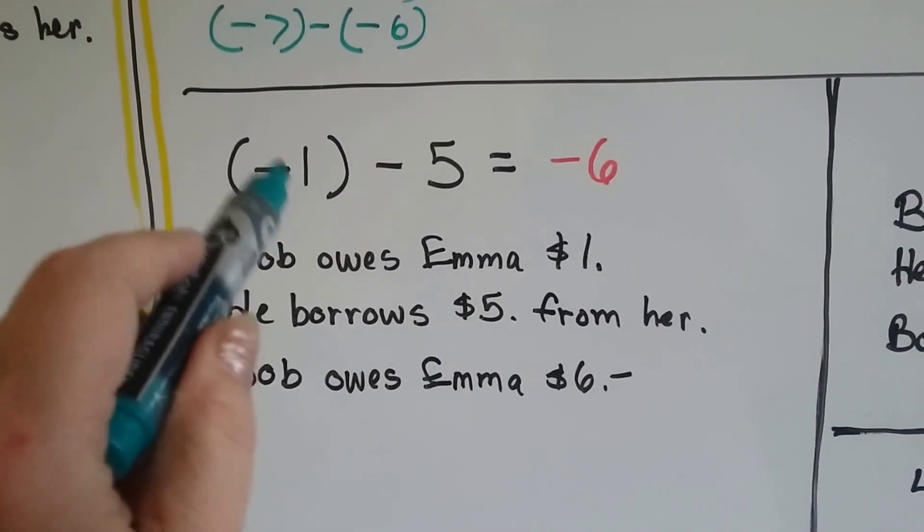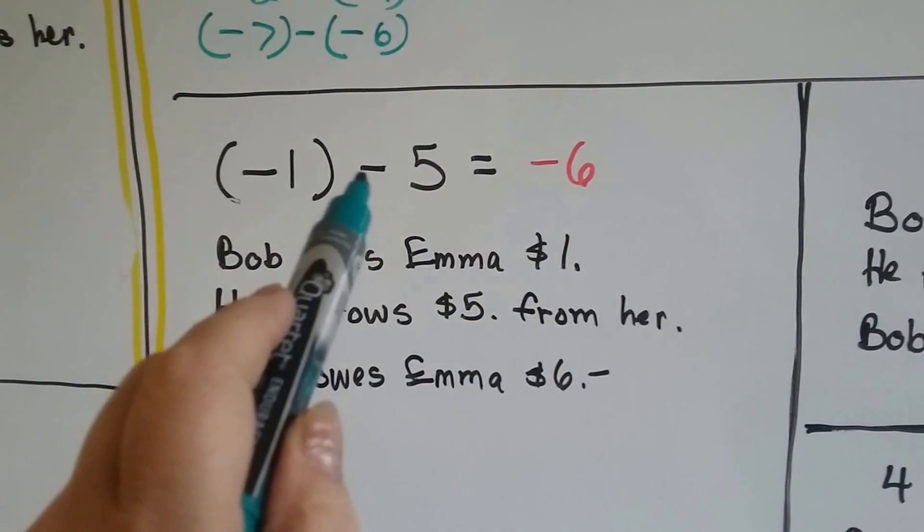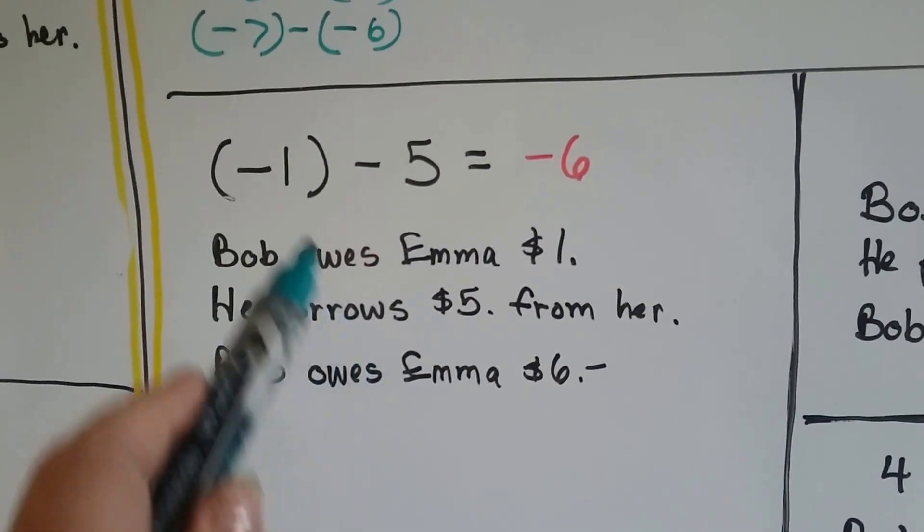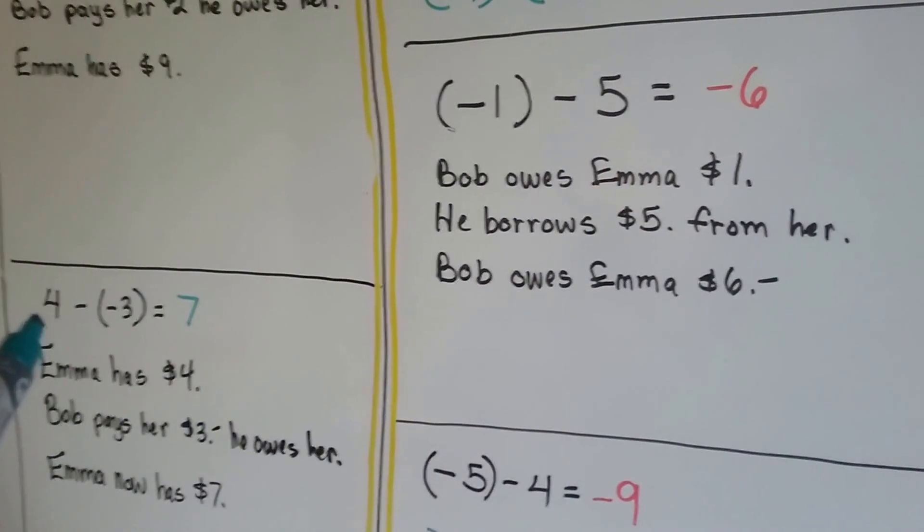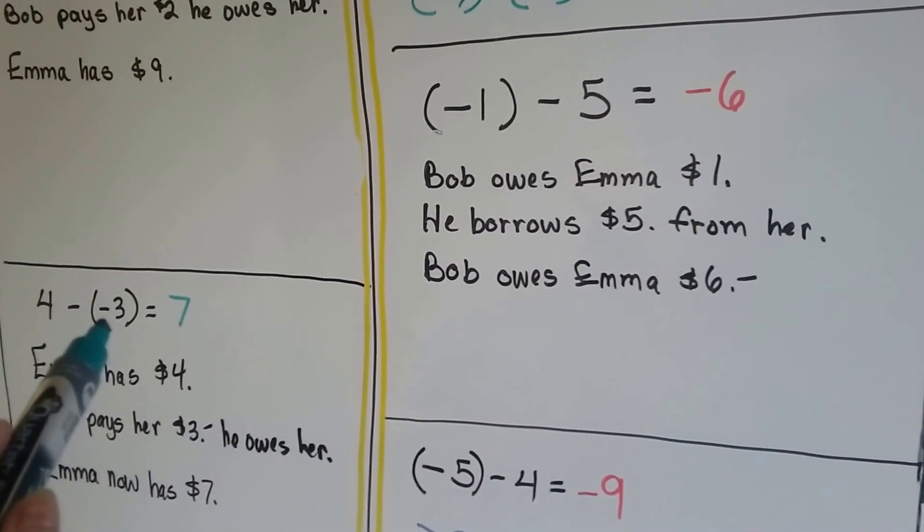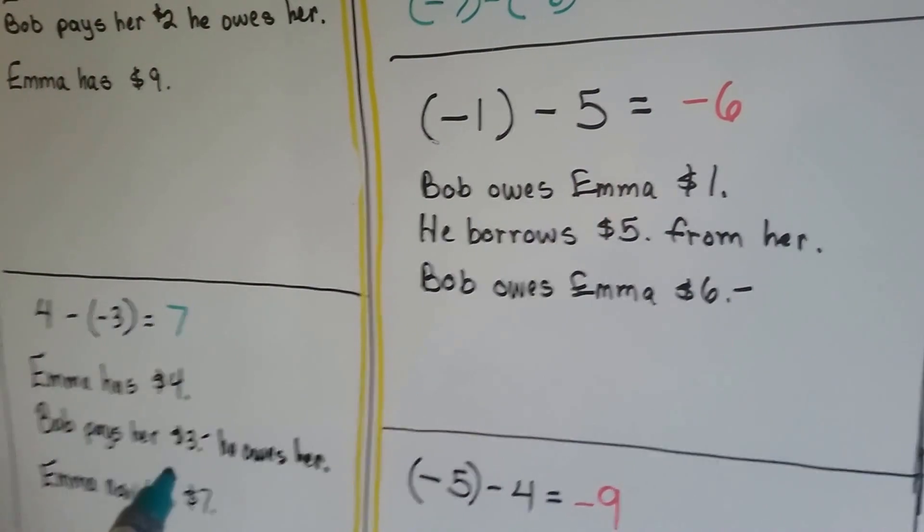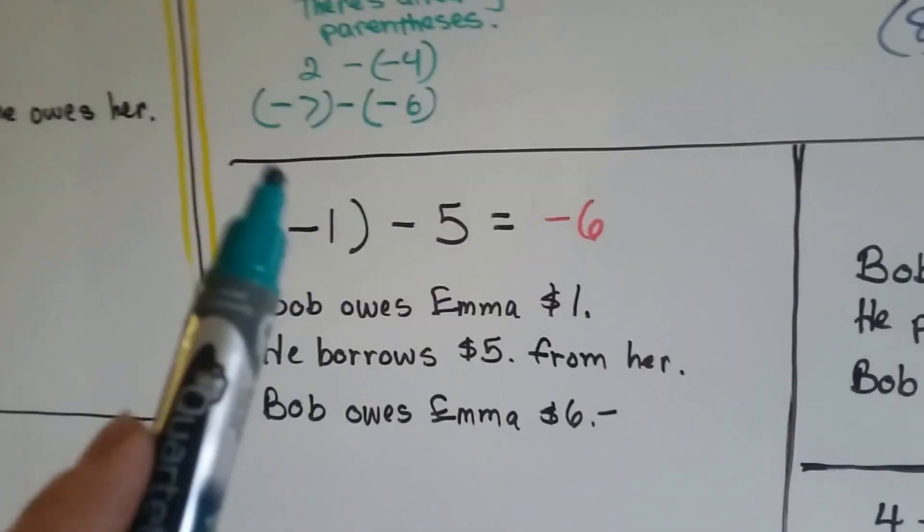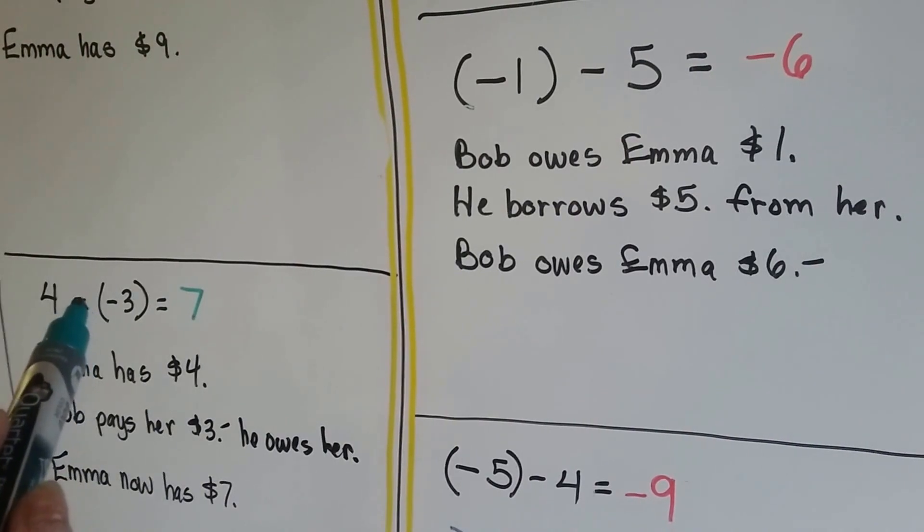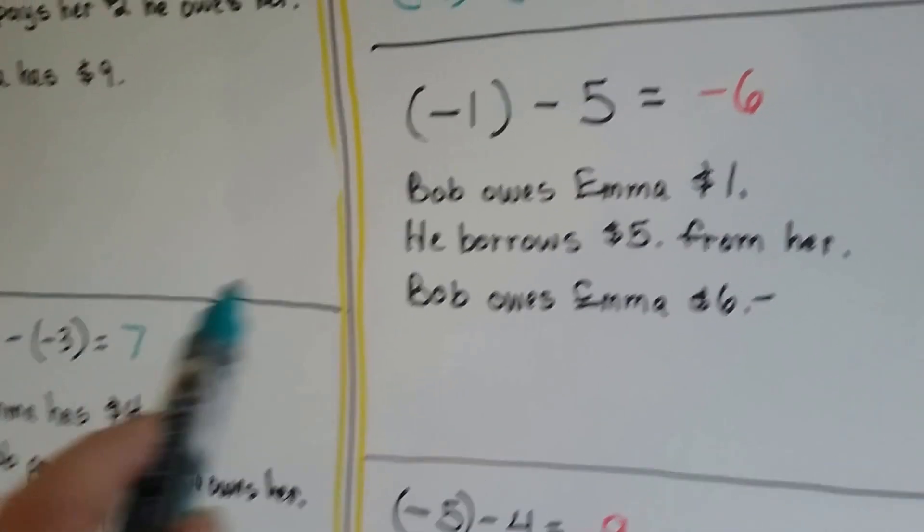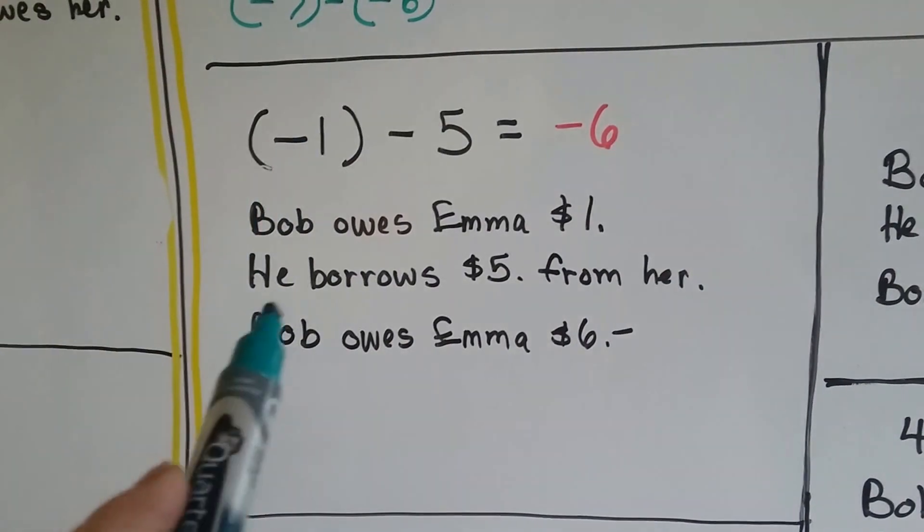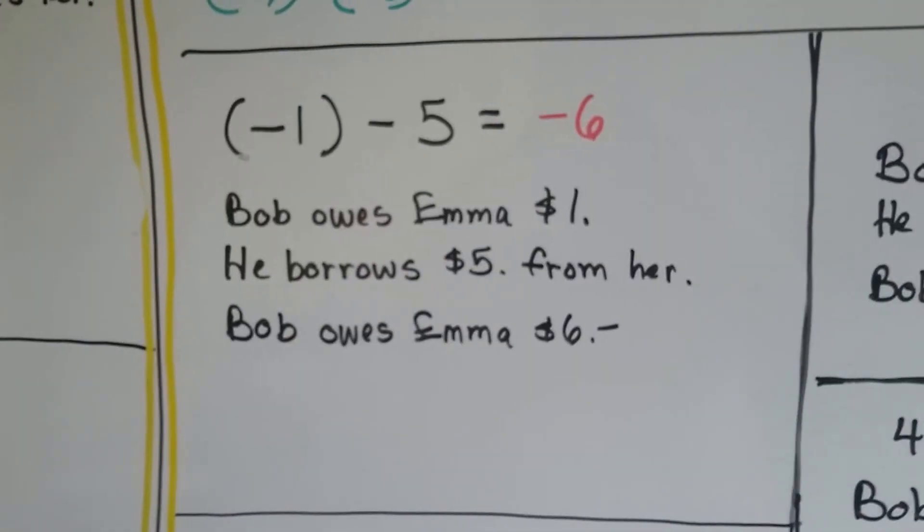Bob owes Emma a dollar. He's a dollar in debt to Emma. And then he takes away another $5. Now he's in debt to her $6. See how that happened? Emma had $4 and Bob took away $3 of his debt. He took away $3 of the debt. That means now Emma had $7. By taking away the debt, he gave her money. But now, he took more money. Do you see how this has got a negative sign and a negative sign in between the two integers? And this one, it's got a negative, then an integer, a negative, and then an integer? Well, he owed her $1. Then he took away another $5. Now he owes her $6.